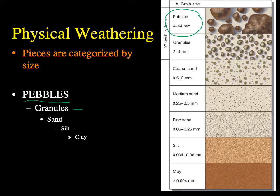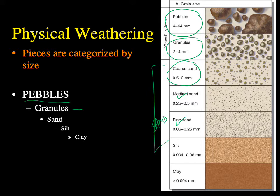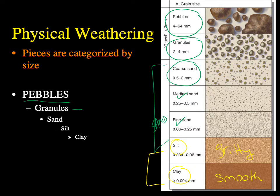Getting a little smaller, you get into sand — coarse, medium, or fine sand. Below sand, you get silt and then clay. Silt still feels gritty between your fingers; clay feels really smooth, almost like Play-Doh. Silt feels more gritty, kind of like a toothpaste.